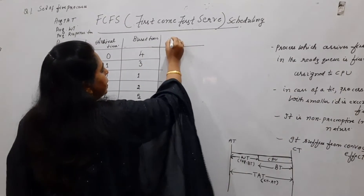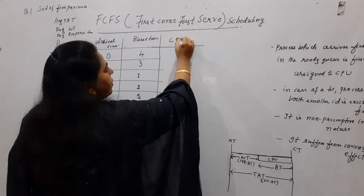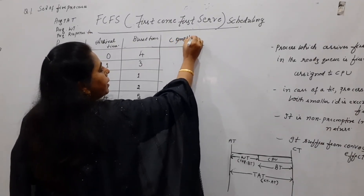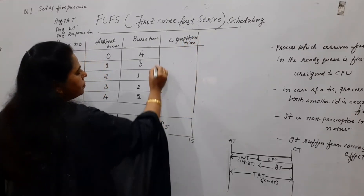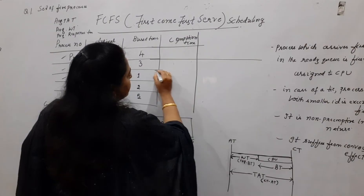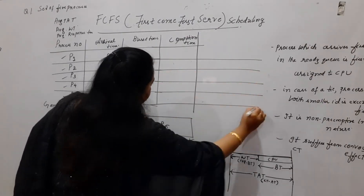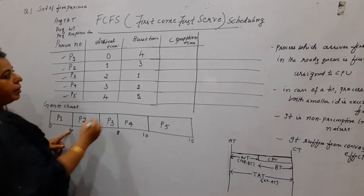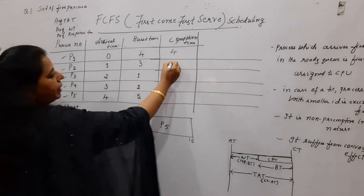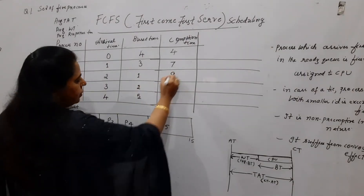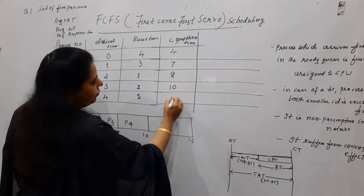In order to compute the turnaround time, you first calculate the completion time, which you get easily from the Gantt chart. P1 completed at time 4, P2 at 7, P3 at 8, P4 at 10, and P5 at 15.